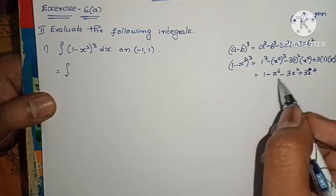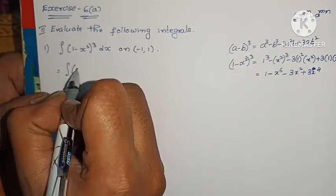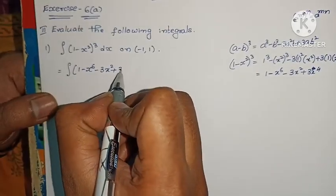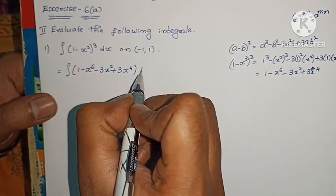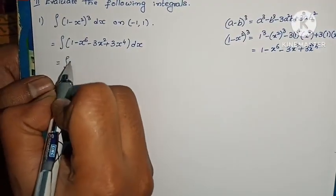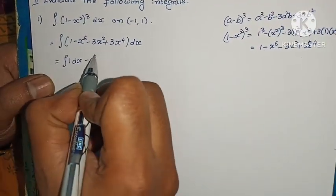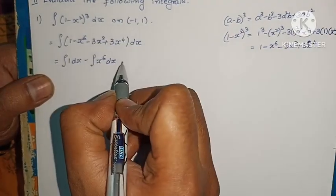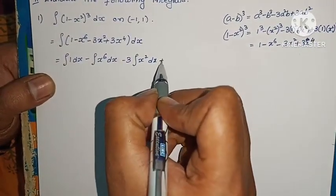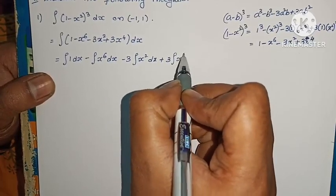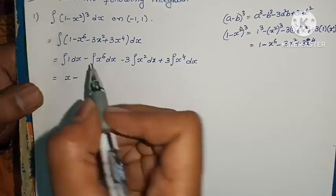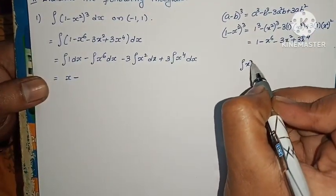Now write the integral. Write it in order. Integral of 1 minus x power 6 minus 3x squared plus 3x power 4 into dx. We can separate the integration: integral 1 dx minus integral x power 6 dx minus 3 into integral x squared dx plus 3 into integral x power 4 dx.